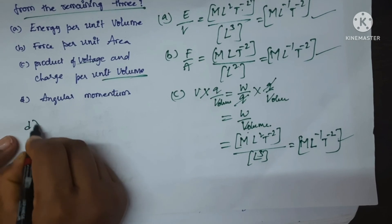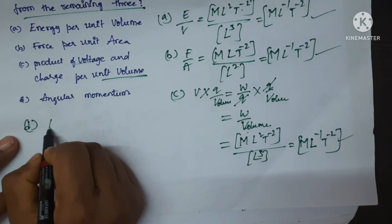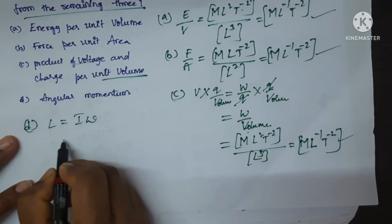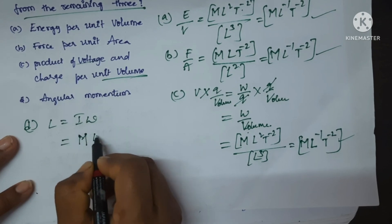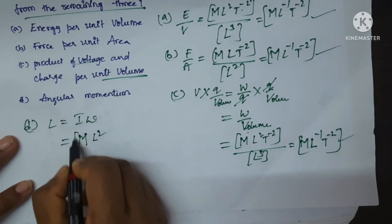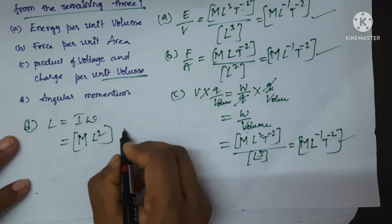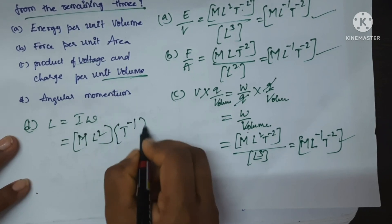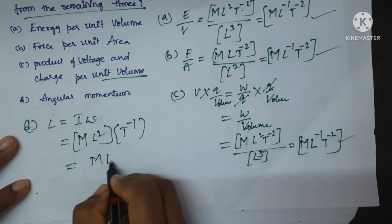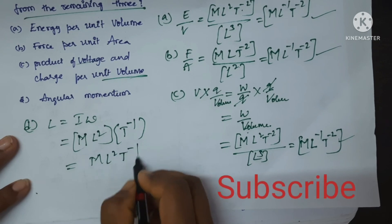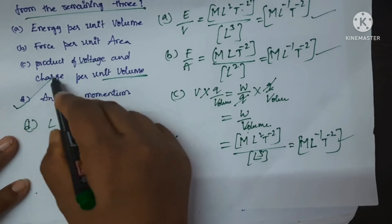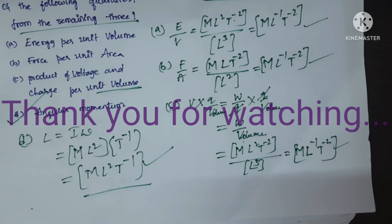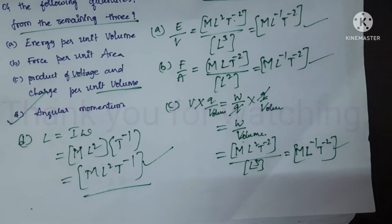Let's check option D — angular momentum L equals I omega. Dimensions of I are M L square, and omega is angular velocity T power minus 1. So which is equal to M L square T power minus 1. This is different from all the other three options, so D is the correct option. I hope you understand. Please do like, share with your friends, and don't forget to subscribe the channel.